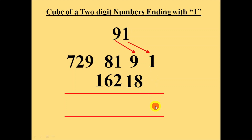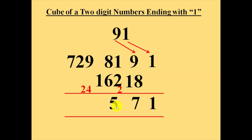Now add these 2 lines. 1 plus 0 is 1. 18 plus 9 is 27 — write down 7 here and carry forward 2. Now 162 plus 81 is 243, plus 2 is 245 — write down 5 here and carry forward 24. Then 729 plus 24 is 753. So the cube of number 91 is 753571.